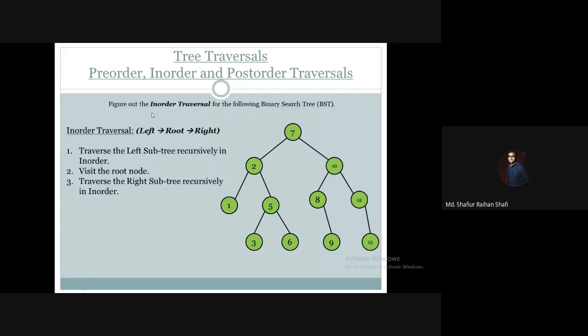So the sequence is: at first traverse the left subtree, then visit the root, then lastly traverse the right subtree — and all of this will happen recursively in in-order manner.